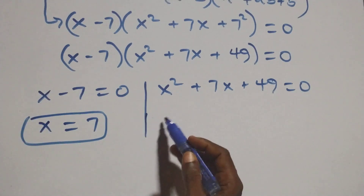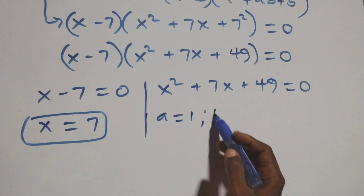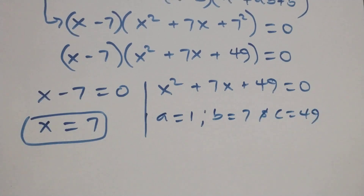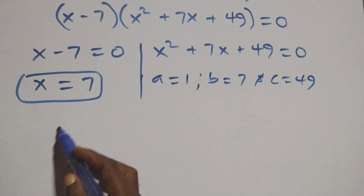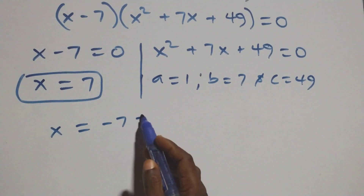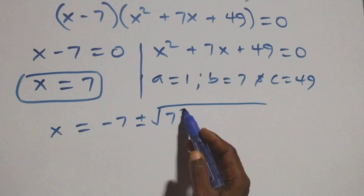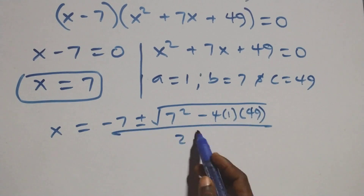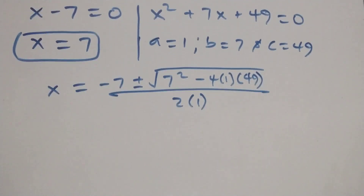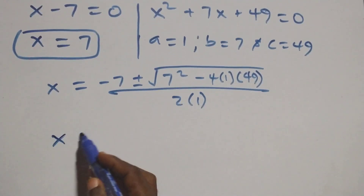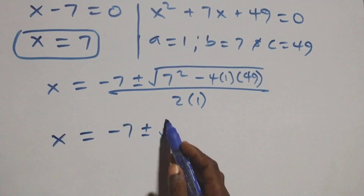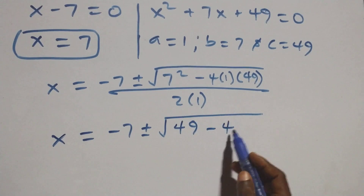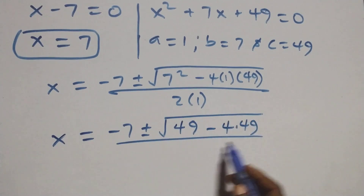And here we have a quadratic equation: a equals to 1, b equals to 7, and c equals to 49. Then applying the quadratic formula, we have x equals to minus 7 plus or minus square root of 7 squared minus 4 times 1 times 49, over 2 times 1. You can leave it as 4 times 1 times 49, over 2.